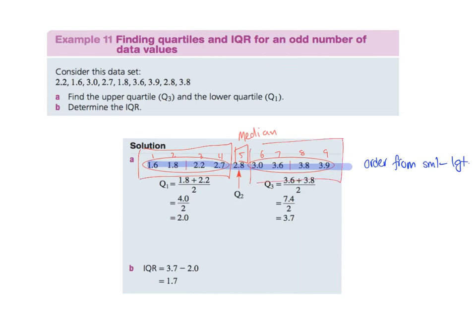And remember the other day when we did the median, when we had an even number, didn't we take the 2 in the middle, yeah, and add them together and divide by 2? So we work out that Q1 is 2, and we work out, we're going to add these two together, divide by 2, and we work out that Q3 is 3.7. So IQR, 3.7 minus 2, and there we go, is 1.7. All right?